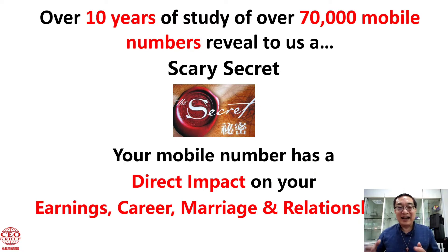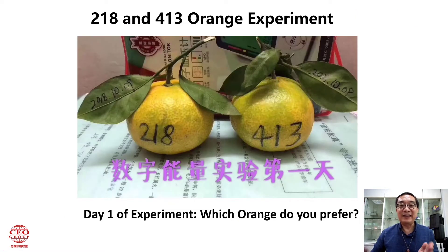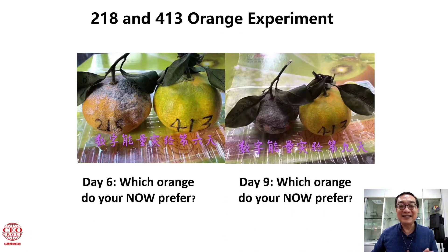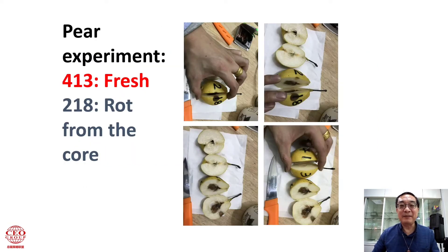So how can we verify this? Let's do the fruit experiments. For example, write the numbers 413 and 218 on two oranges. Based on your first look, which orange do you prefer? Most people prefer the 218. But on the ninth day, you realize the 218 orange is actually rotten and black. Anyone can do these experiments at home by yourself.